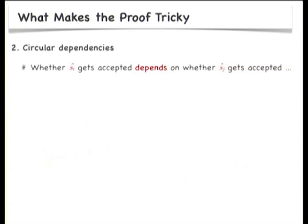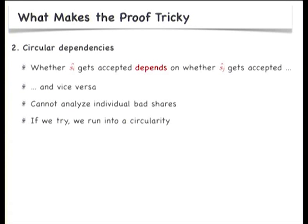The other thing that makes the proof tricky is circular dependencies. Whether a bad share S_i gets accepted or not depends on whether other bad shares get accepted, which depends on whether they get votes from bad players, and vice versa. This means you cannot individually analyze the probabilities for bad shares to get accepted and apply a union bound as in Rabin-Benor — if you try, you run into circularity.